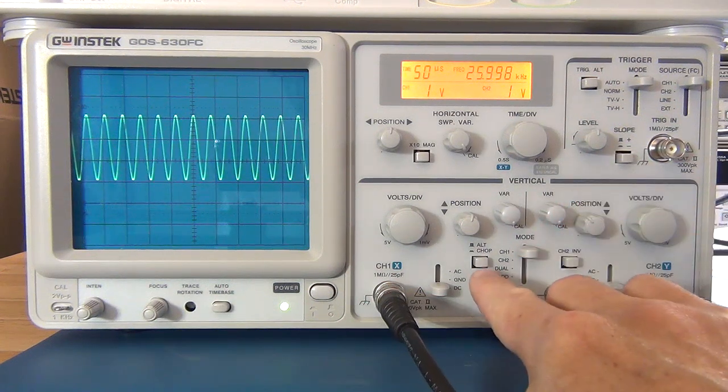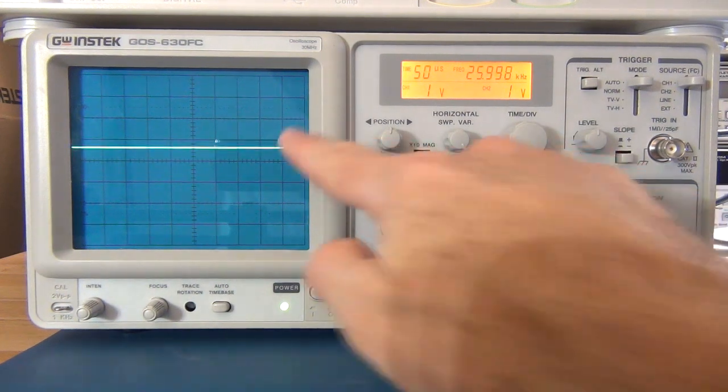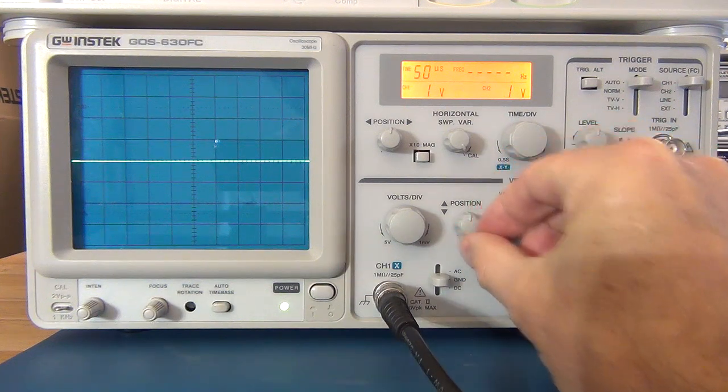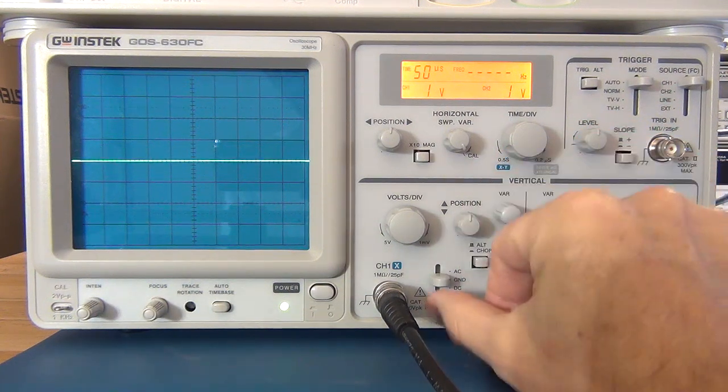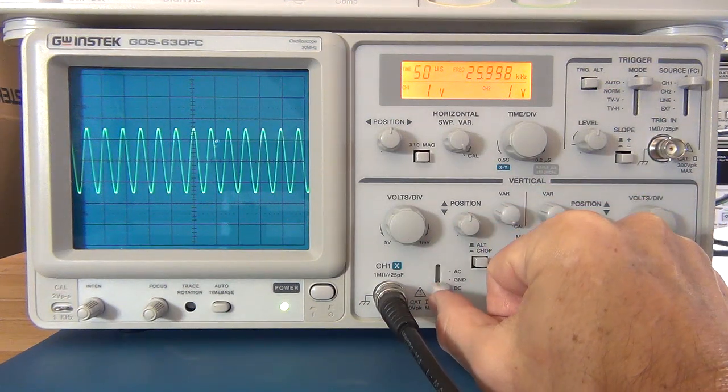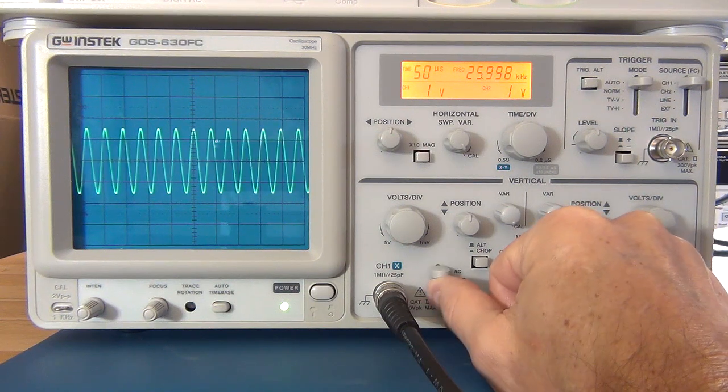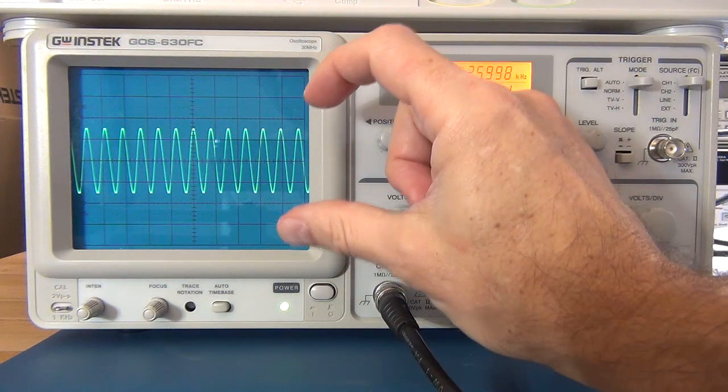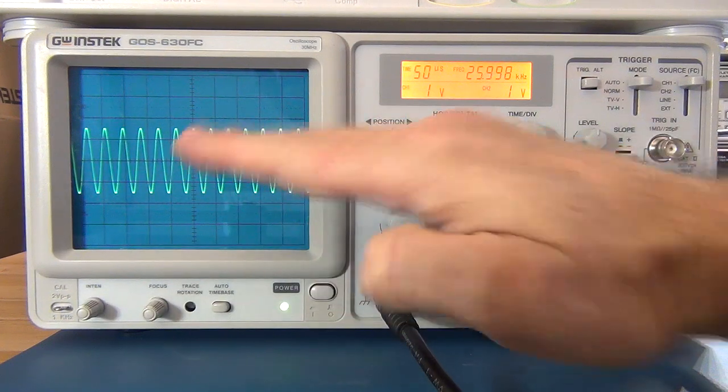We've got a button here which gives you a ground which will just ground your signal for zero volts. That will allow you to set your trace exactly on the zero line. DC is the one you're going to most commonly work in. That's going to show you the complete waveform coming in without any changes. Going to AC will remove any DC offset. So it will in essence zero the actual signal for you. I'll just demonstrate that.